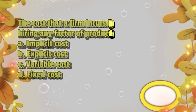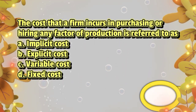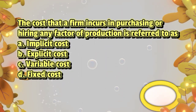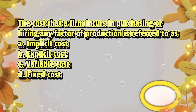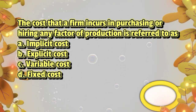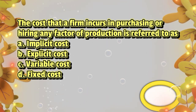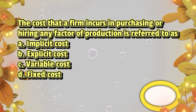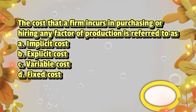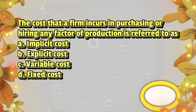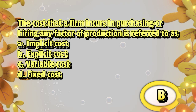The cost that a firm incurs in purchasing or hiring any factor of production is referred to as: A. Implicit cost, B. Explicit cost, C. Variable cost, D. Fixed cost. The answer is letter B.